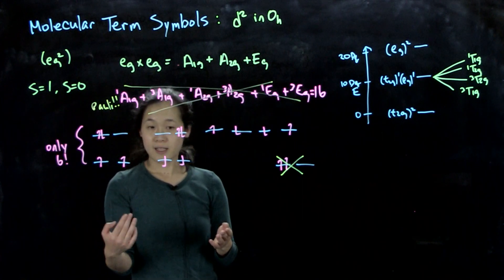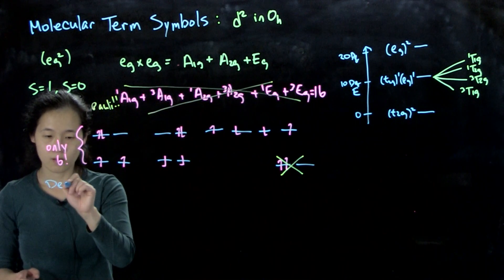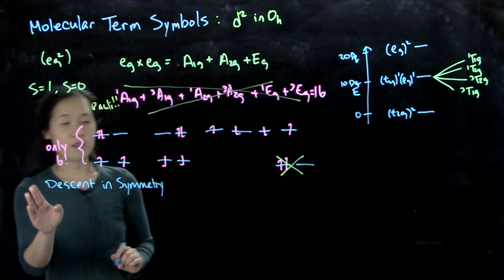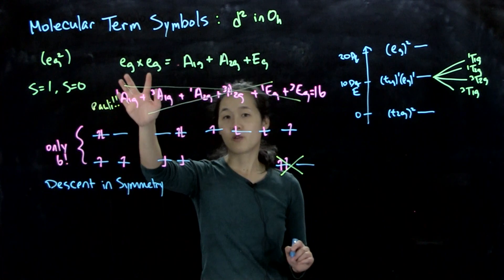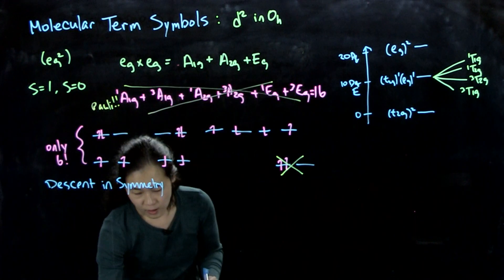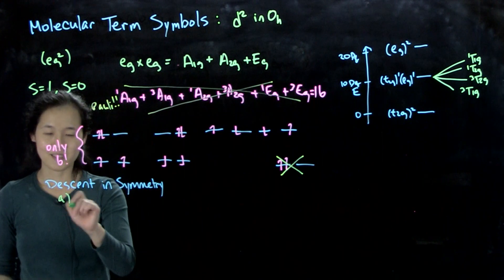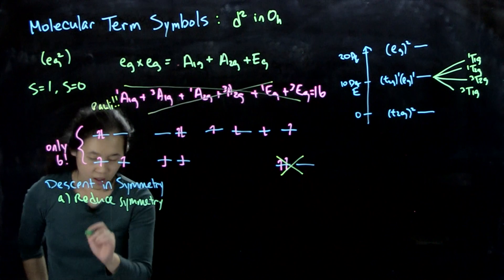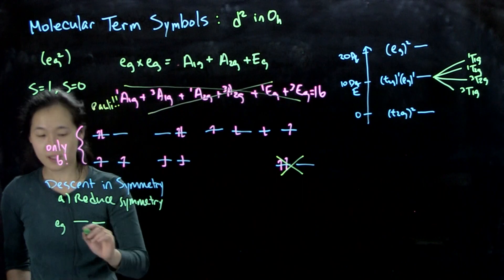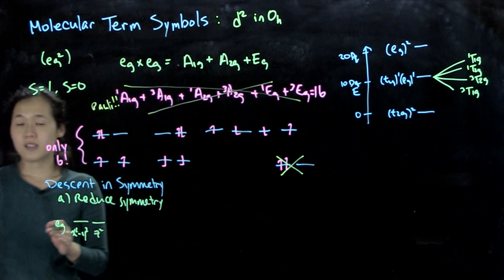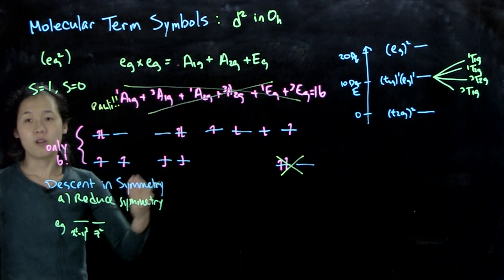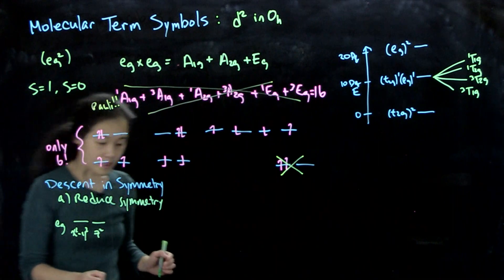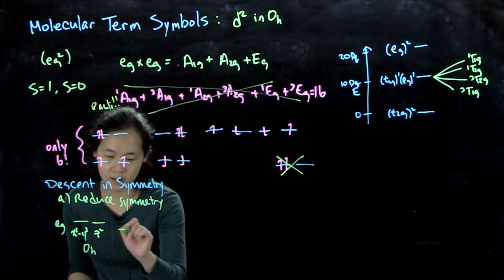So we have to figure out which ones that we can cancel out and which ones we can't. There's another way to do it, which we'll do in class. But in this video, we'll cover descent in symmetry. And the reason we want to descend in symmetry is that the reason that we have this problem with multiplication is because we have these degenerate orbitals that end up messing us up. So the first step in descent in symmetry is we want to reduce our symmetry. That's obviously.